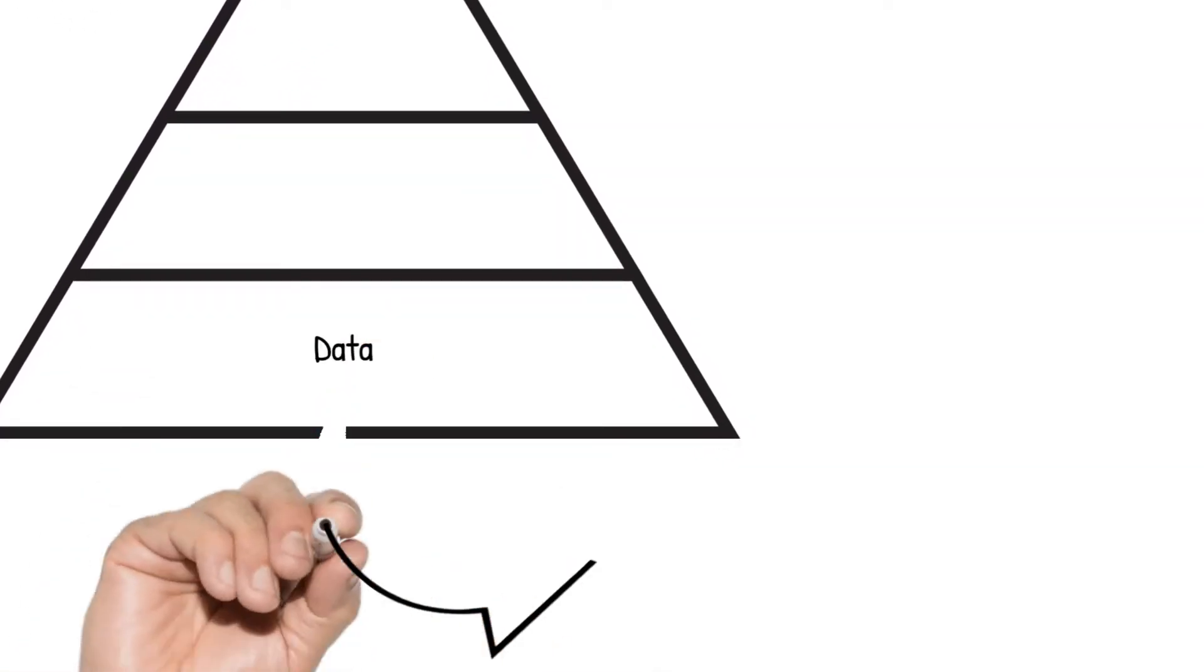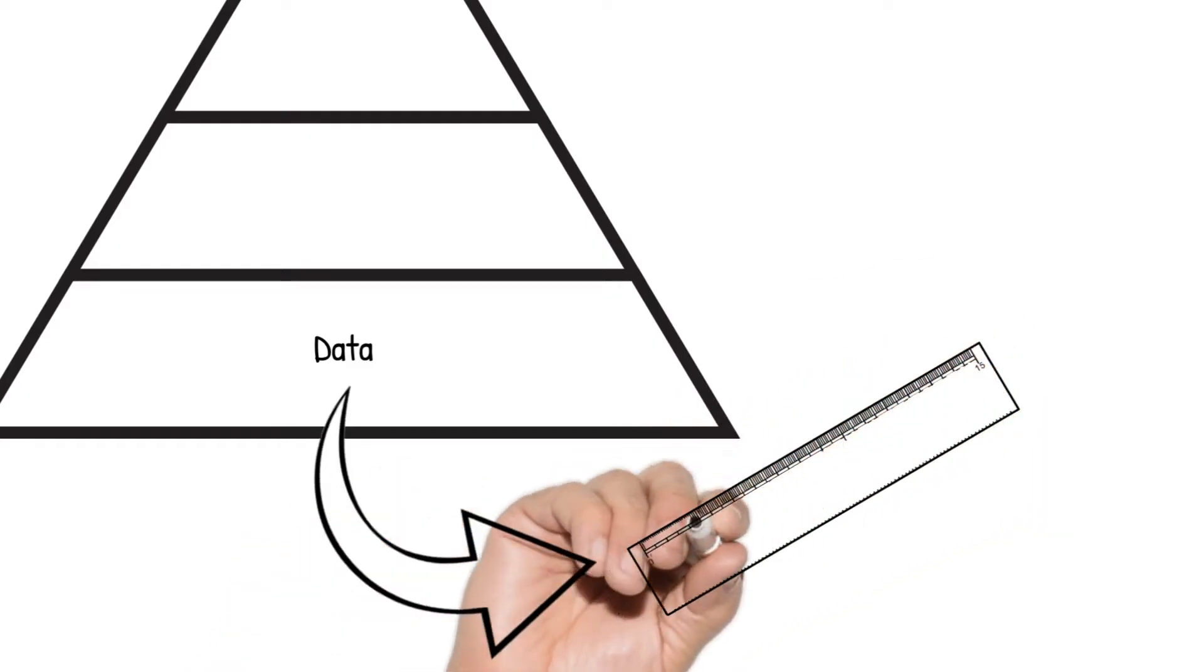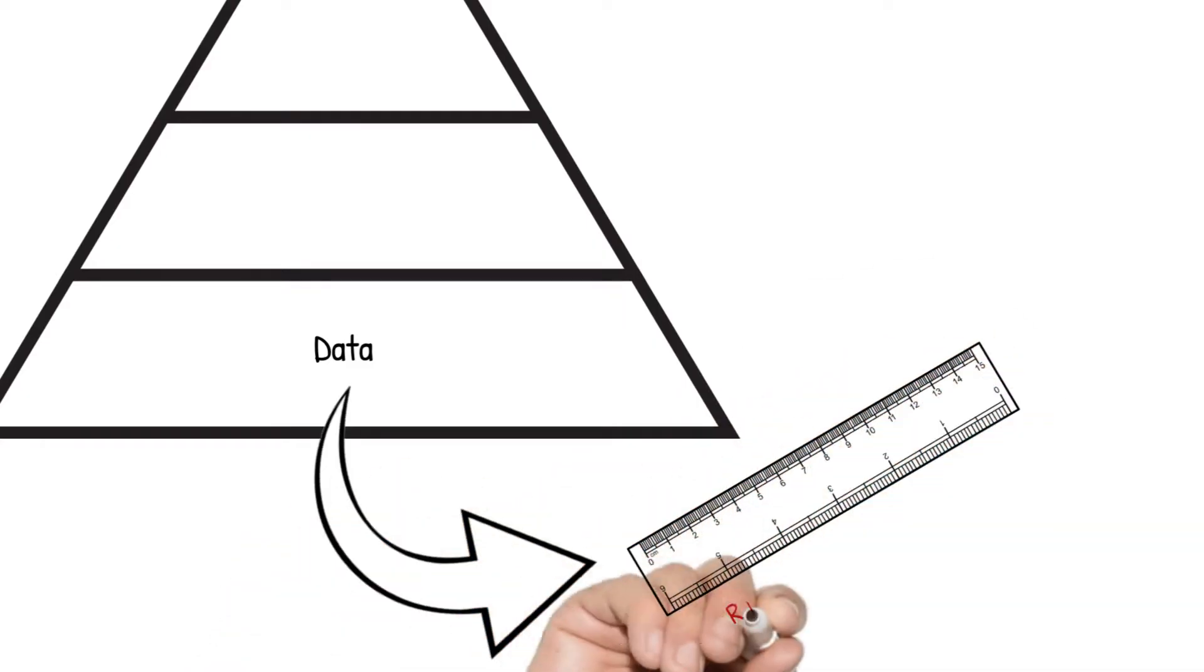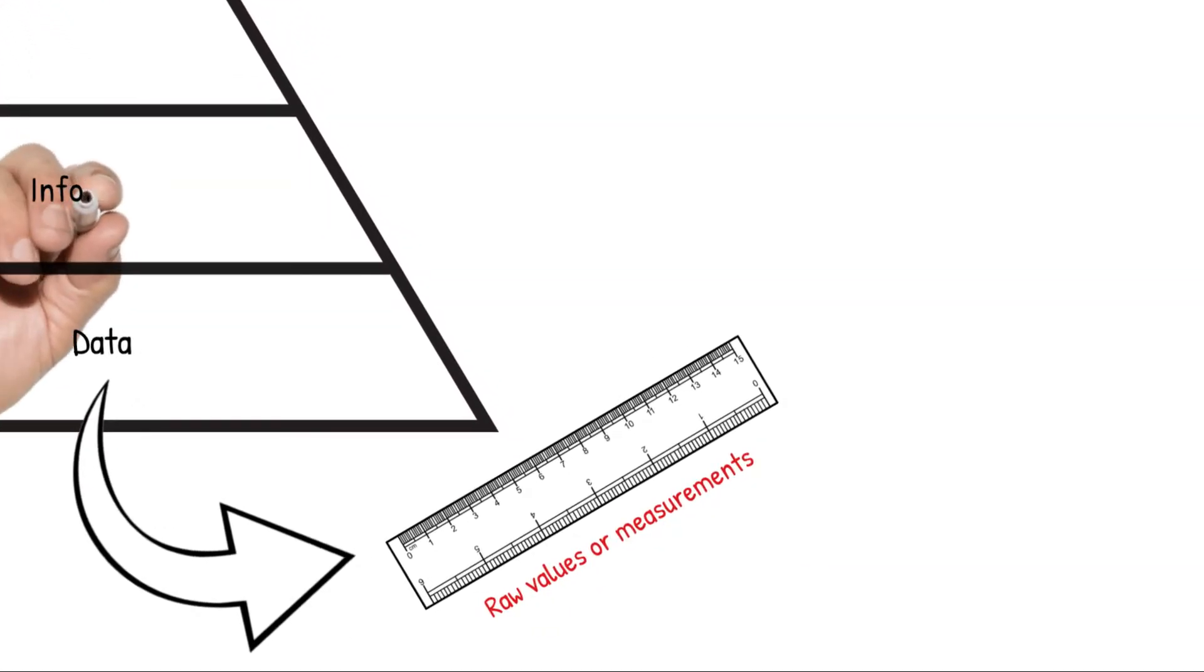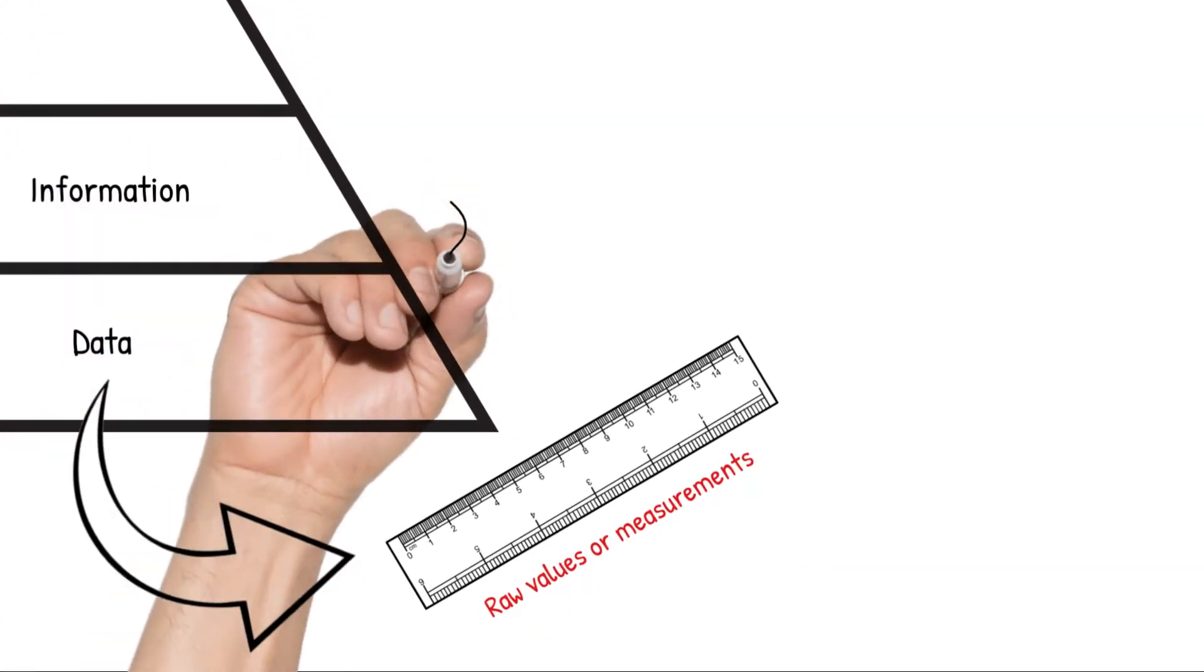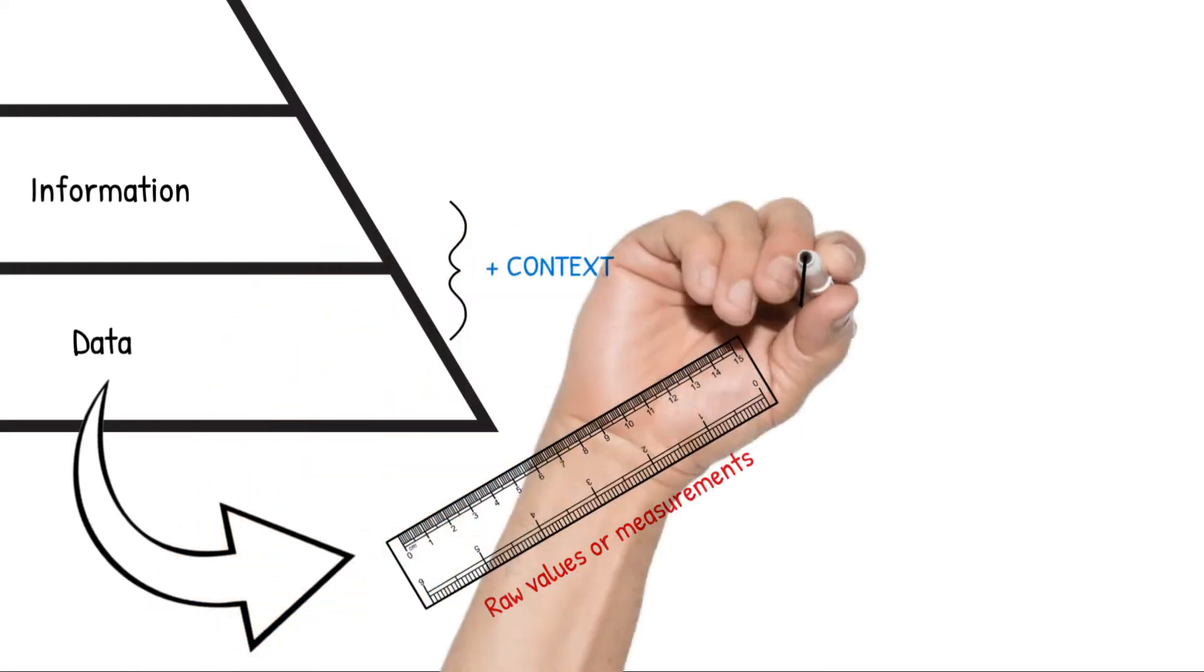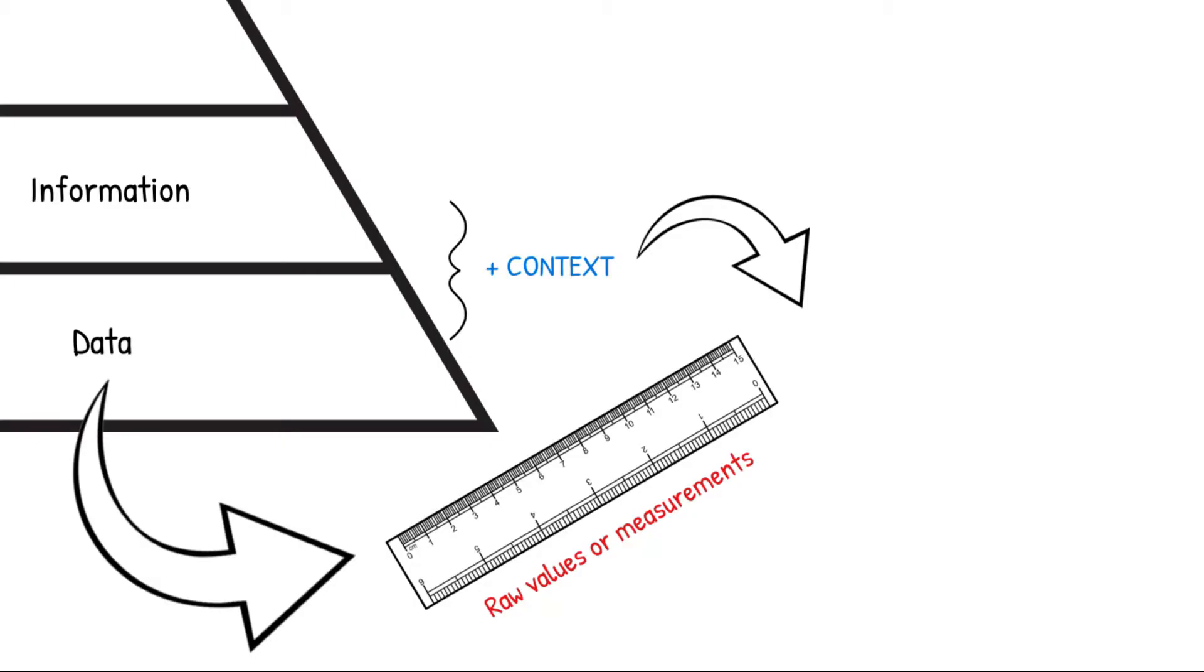At the base of the pyramid we have data. Data is very abundant but it is also relatively meaningless. Data consists simply of raw values or measurements. Information is the next step up in the pyramid. Information consists of data with the addition of context. Context is supplemental data that provides meaning to the original data set.